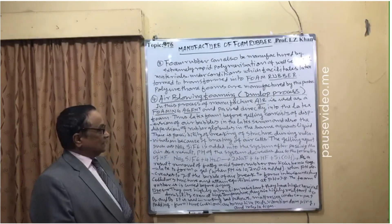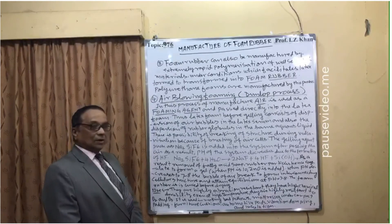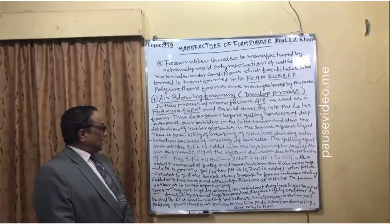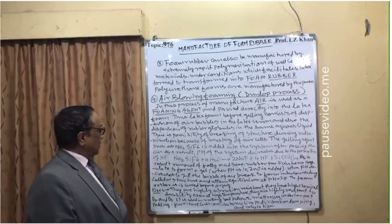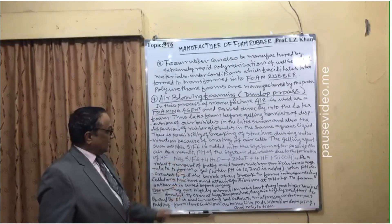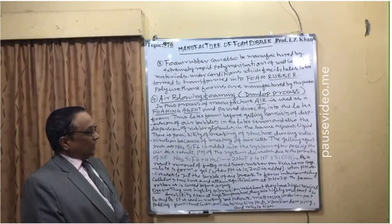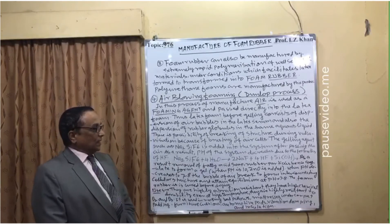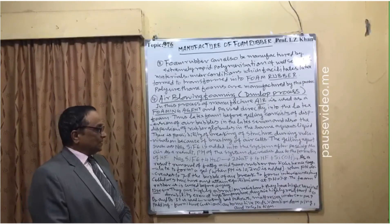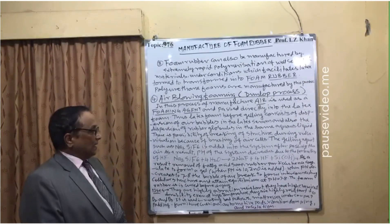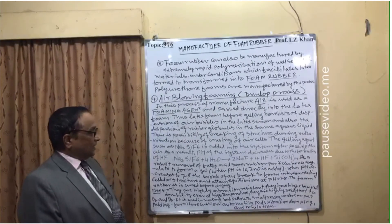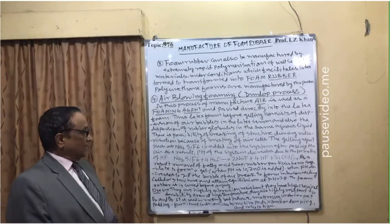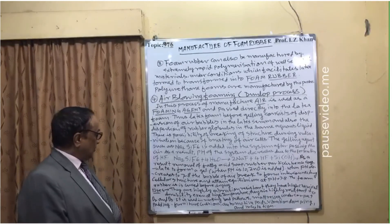The gelling agent sodium silicofluoride (Na2SiF6) is added into the system after passing the air. As a result, the pH of the system decreases due to the formation of hydrogen fluoride (HF). The reaction is: Na2SiF6 + 4H2O → 2NaF + 4HF + SiO2. As a result, removal of fatty acids causes rubber particles to coagulate and form a gel. When pH is 10, zinc oxide is added. When pH decreases to 7-8, the air bubbles break to form a connected cellular structure and attain equilibrium.